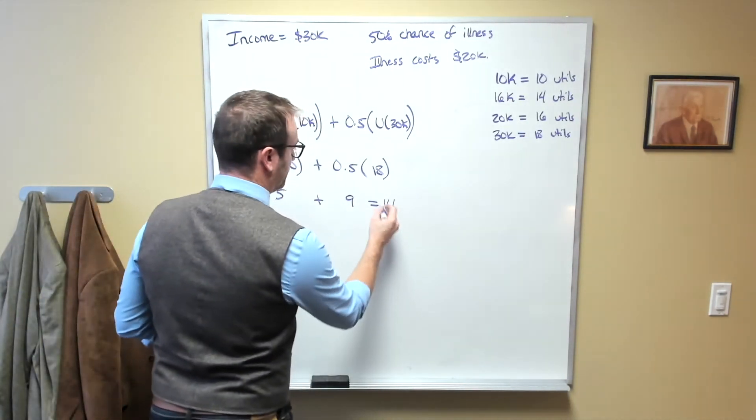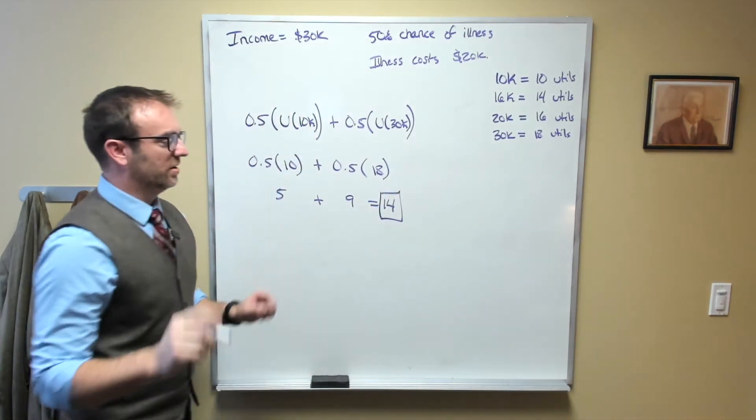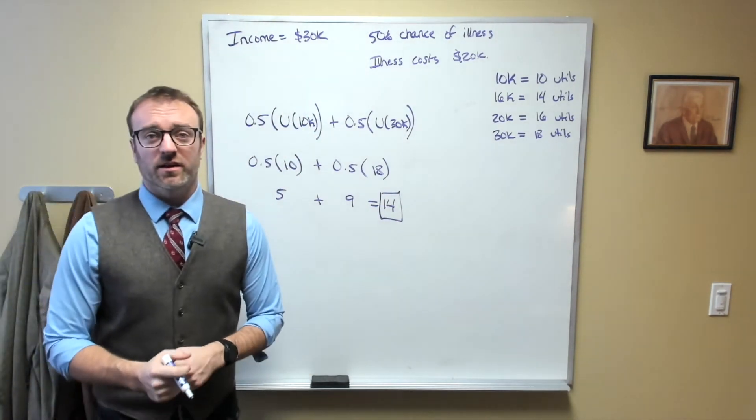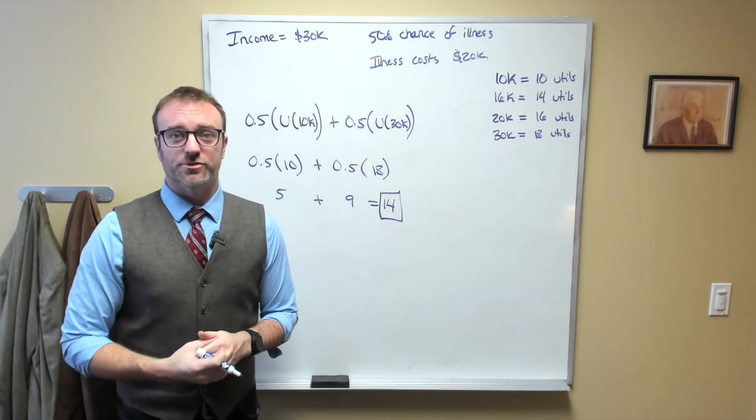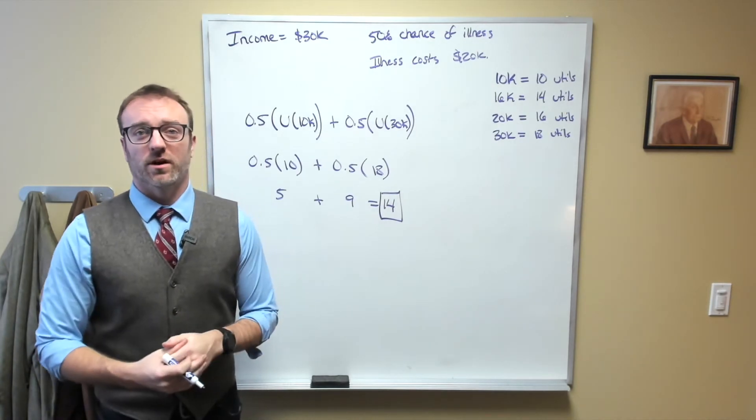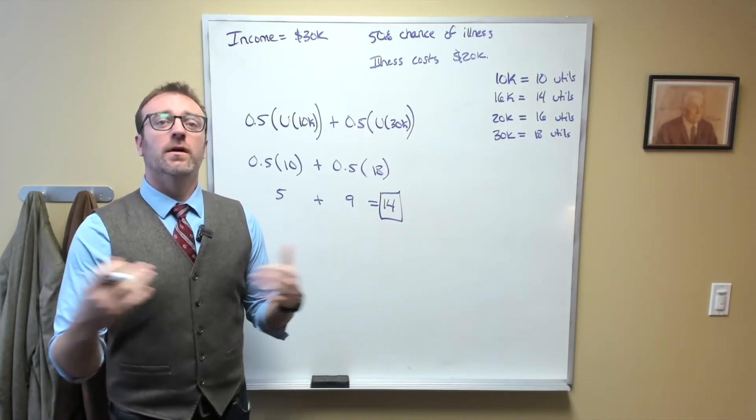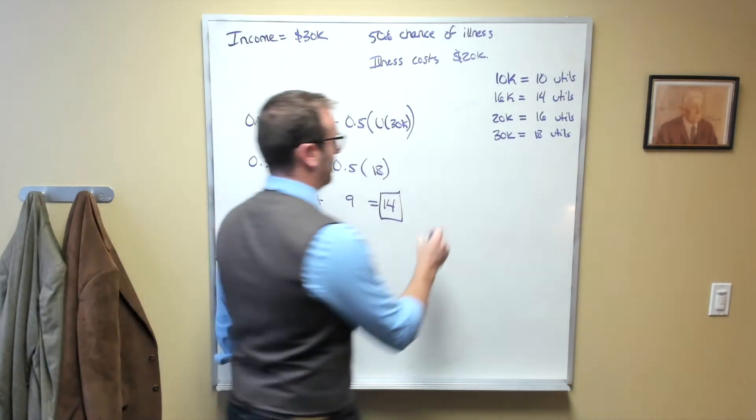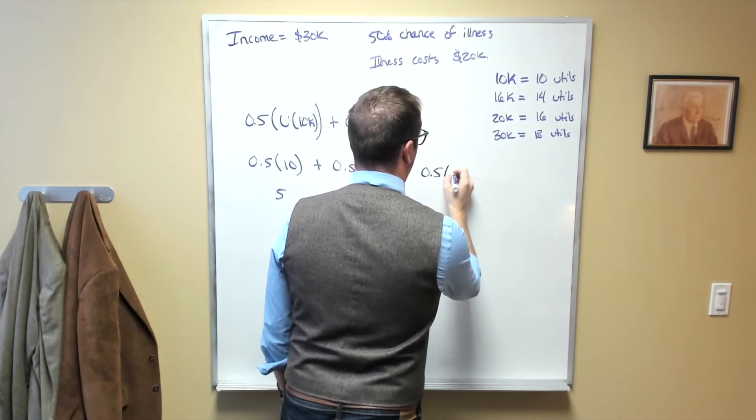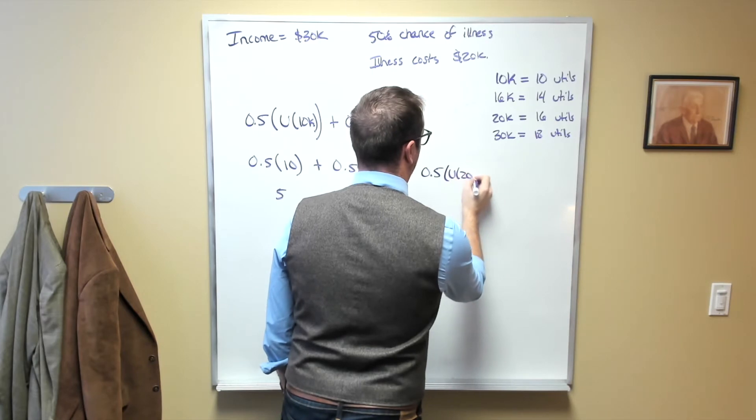So we'll take this 14 and we'll keep it in mind. Now, if they're sick and they have this actuarially fair insurance, insurance pays the cost of their premiums. And so they'll have $20,000. So we'd have a probability of them having some utility of $20,000.